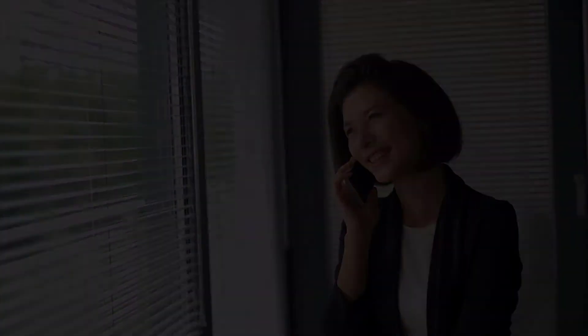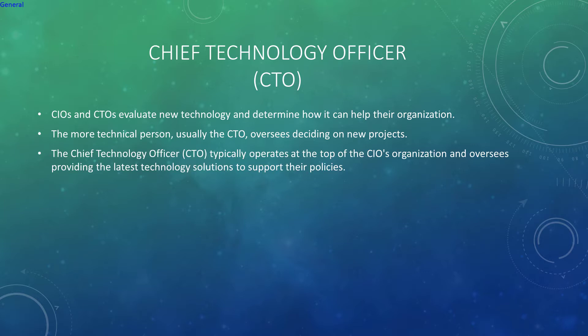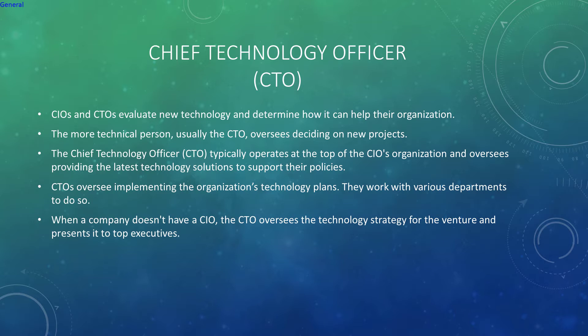Chief Technology Officers (CTOs) evaluate new technology and determine how it can help their organization. When both CIO and CTO are present, the CTO usually has more technical expertise. The CTO usually reports directly to the CIO and is responsible for designing and recommending the appropriate technology solutions to support the CIO's policies and directives. CTOs also work with different departments to implement the organization's technology plans. When a company does not have a CIO, the CTO determines the overall technology strategy for the firm and presents it to top executives.